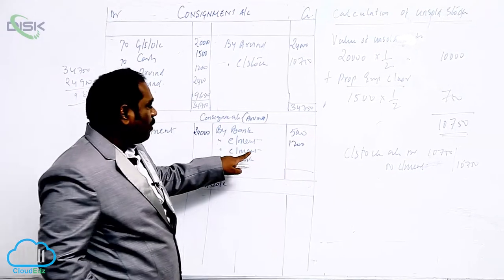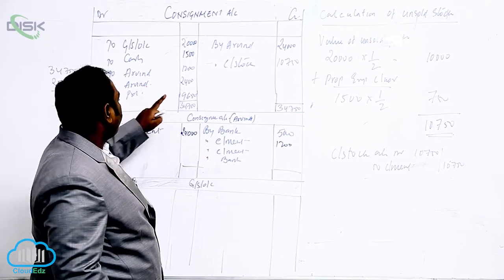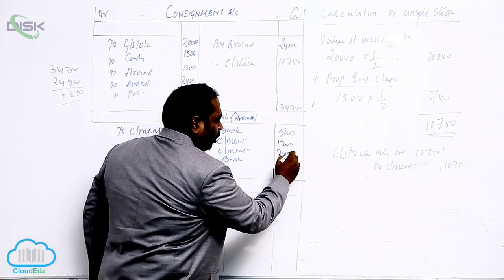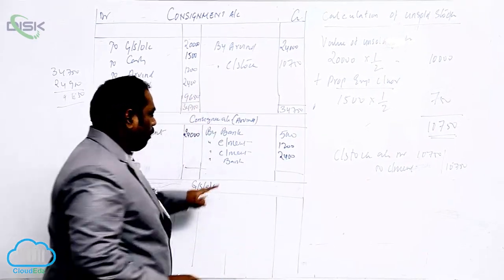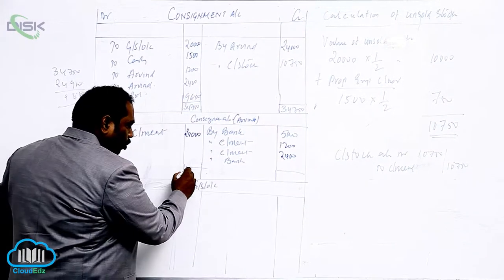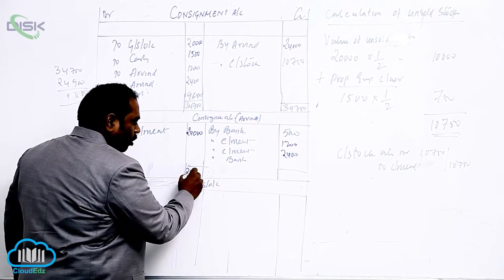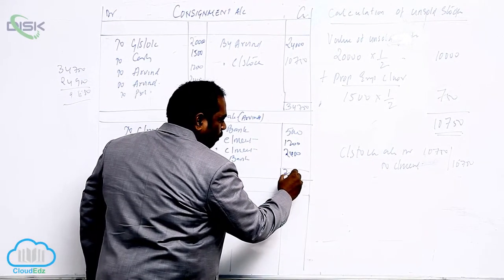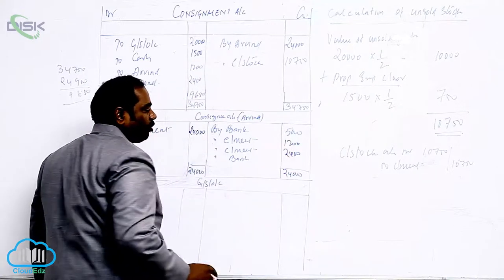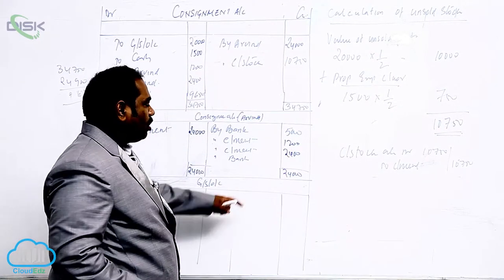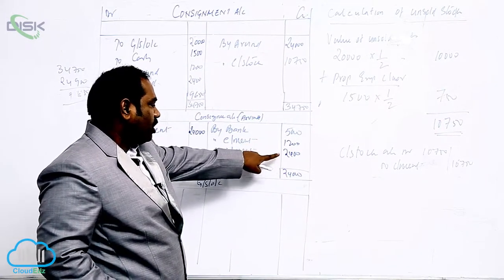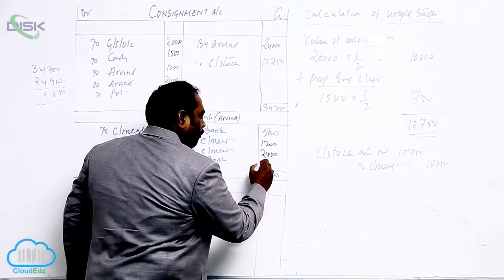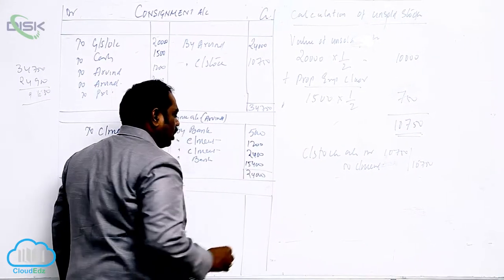By consignment is for commission. What is the entry for commission? 2,400, which is already calculated. By bank for settlement. When you close the consignee account, we will get the balance amount: 24,000 minus 5,000 is 19,000, minus 3,000 is 16,000, minus 6,000 is 15,000, and 400 is the settlement.